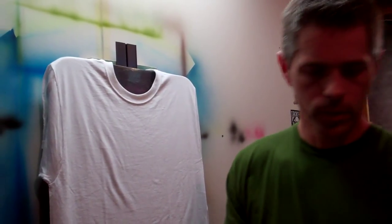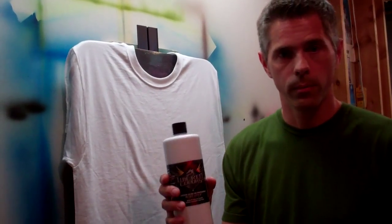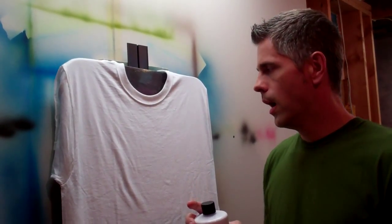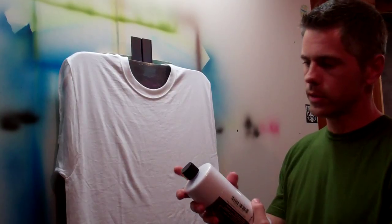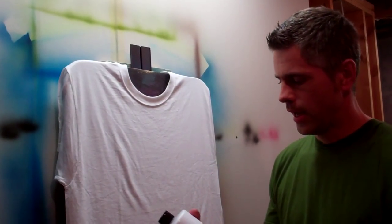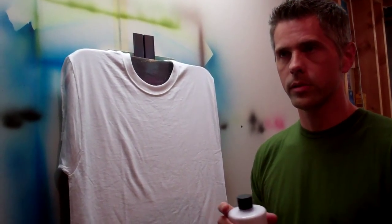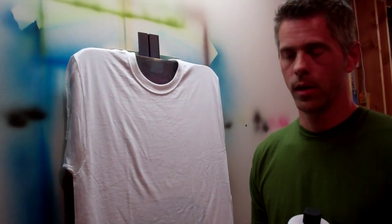So what I like to use is the Wicked Transparent Base. It's a colorless binder that you can add to any of your Wicked Colors. It comes clear, looks a little milky in the bottle, but once you get it on the shirt and press it, it's clear. It's not like the reducer. The reducer is used to thin out your paint, create more transparency and flow depending on the type of brush you're using or the surface you're painting on.